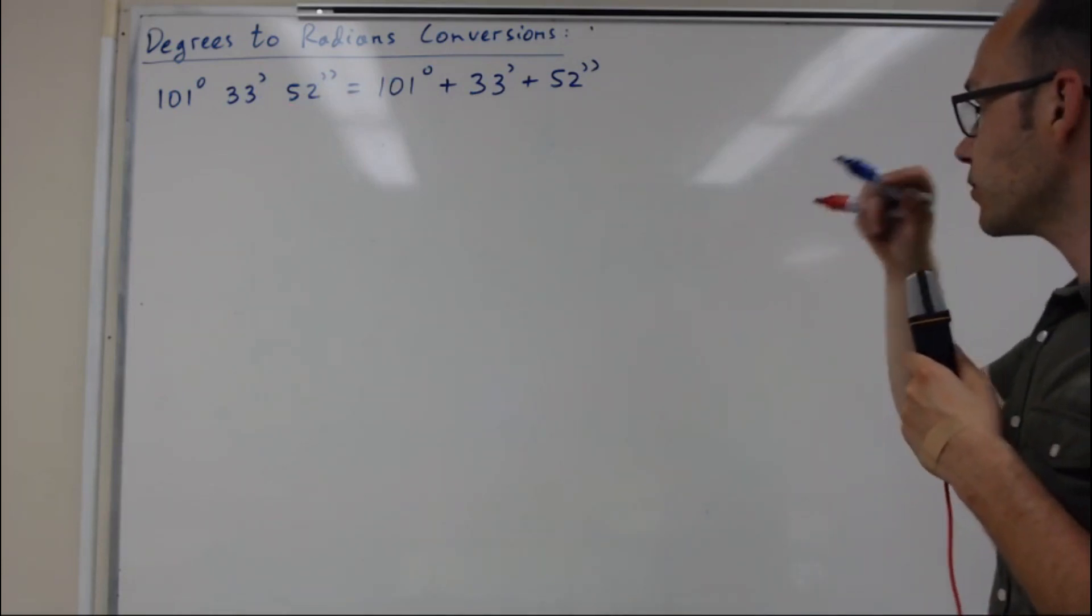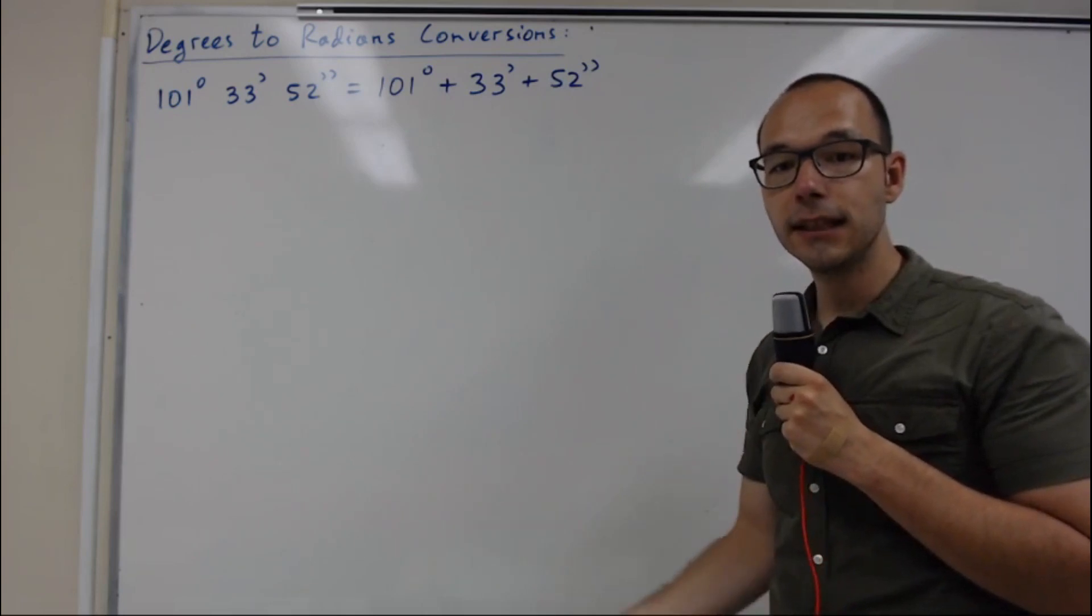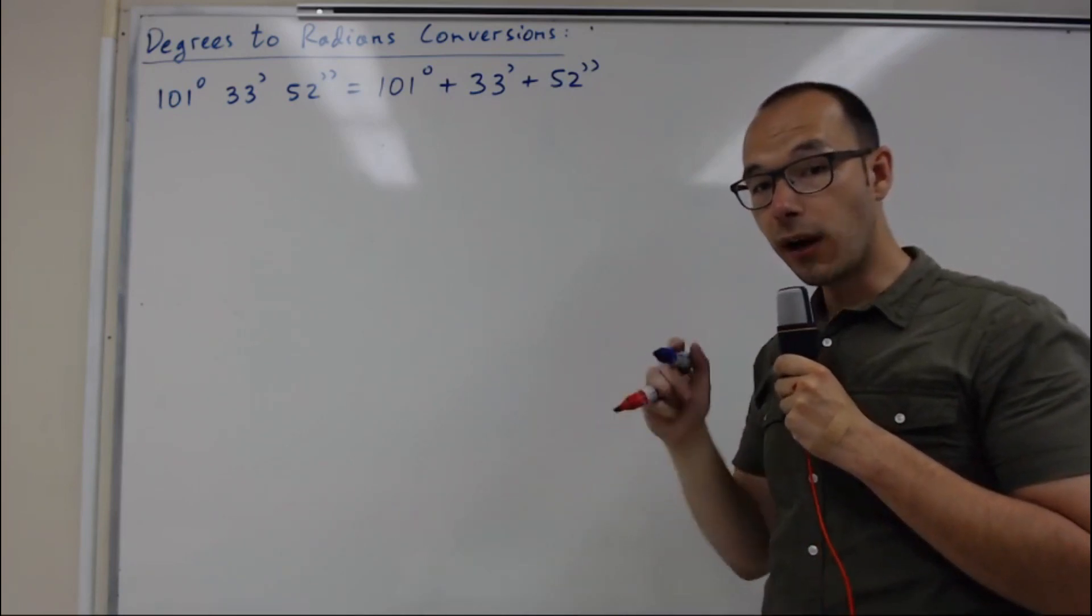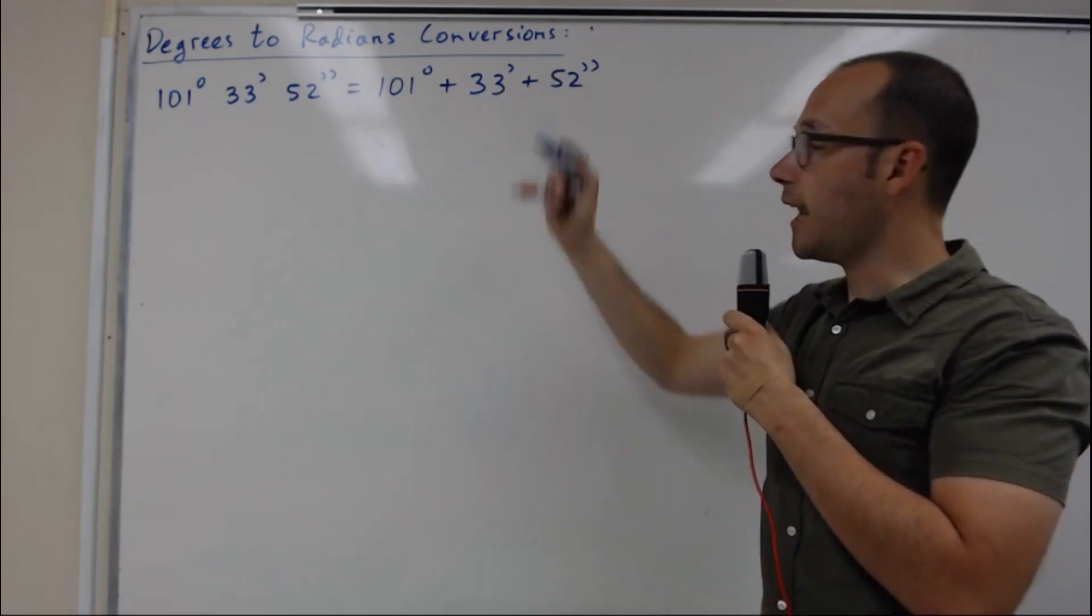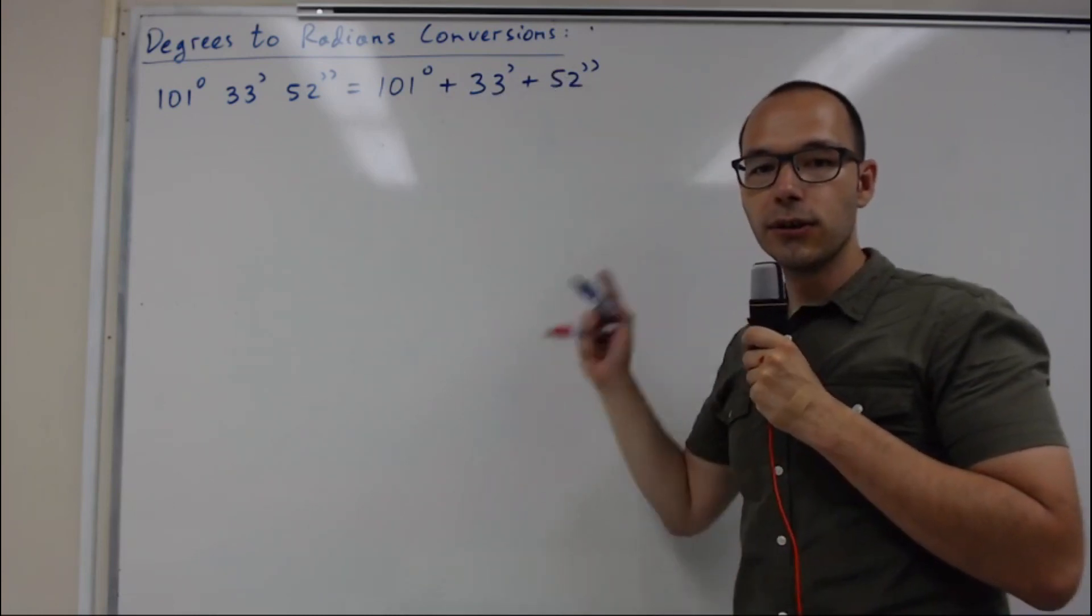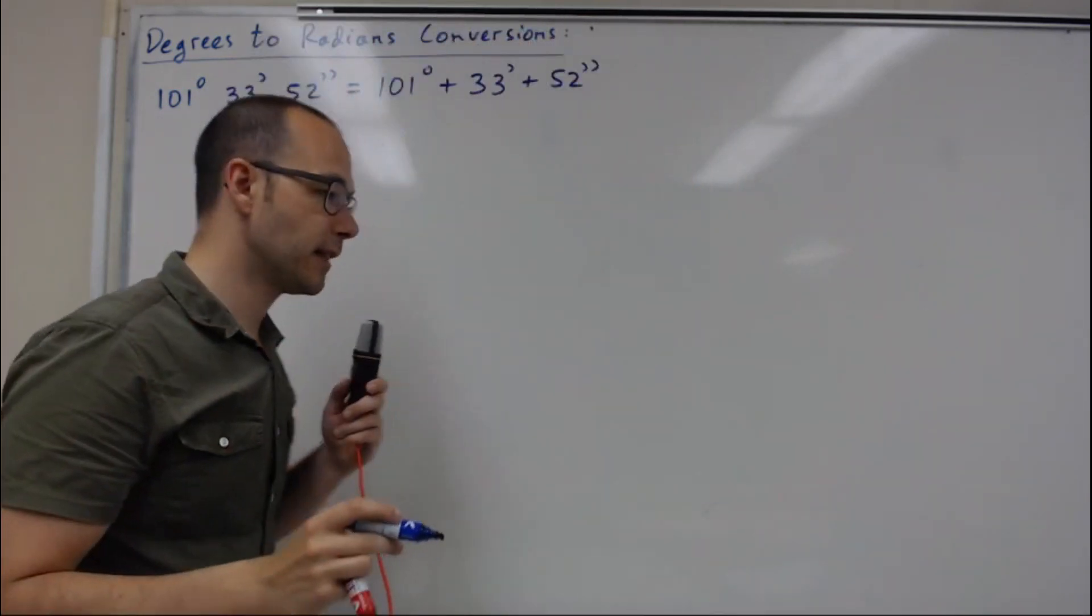We have to first convert minutes and seconds into degrees because we already know how to convert degrees into radians, but not minutes and seconds. So we first have to convert them back into degrees. I'm going to write that down.